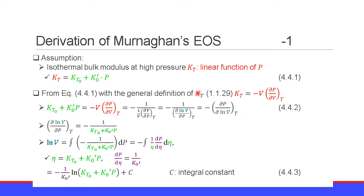Equation 4.4.1. From this equation, with the general definition of the isothermal bulk modulus — which is equal to minus V times the partial derivative of pressure P with respect to volume V at temperature T — we have KT0 plus K0' P equal to minus the partial derivative of pressure with respect to the natural logarithm of volume V at temperature T. This is Equation 4.4.2.